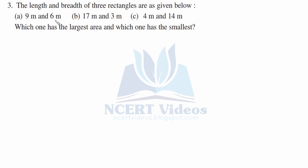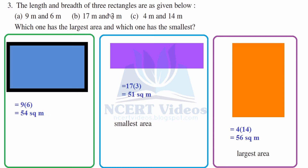Third question: the length and breadth of three rectangles are given — 9 meter and 6 meter, 17 meter and 3 meter, 4 meter and 14 meter. Which one has the largest area and which one has the smallest? We will find the areas and compare. So 9 into 6 is 54 square meter.